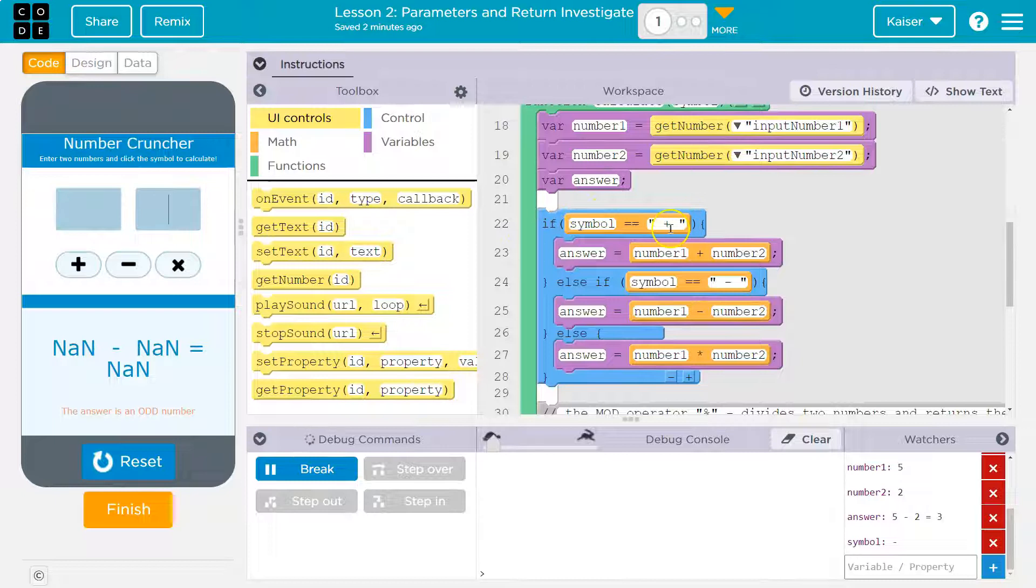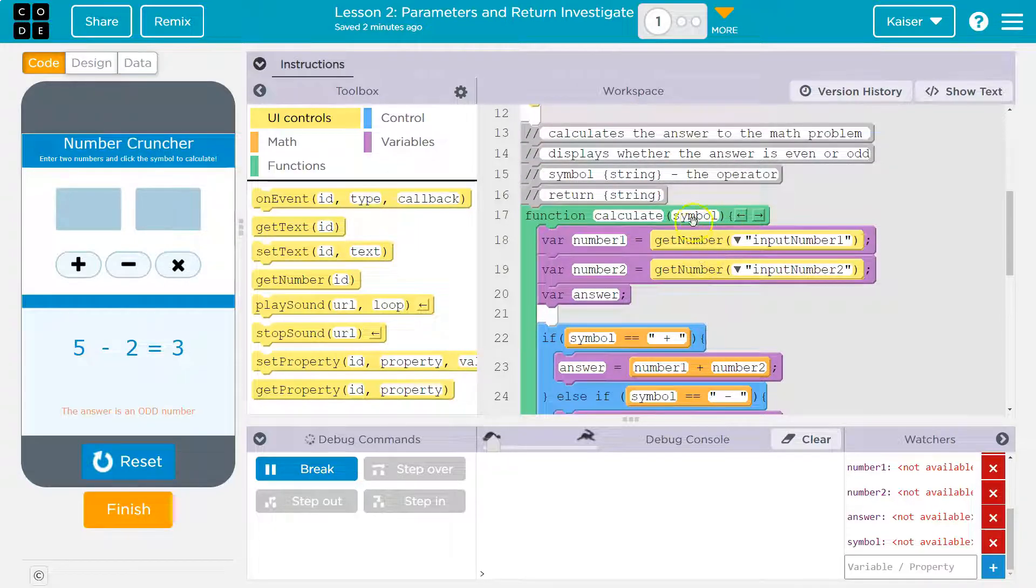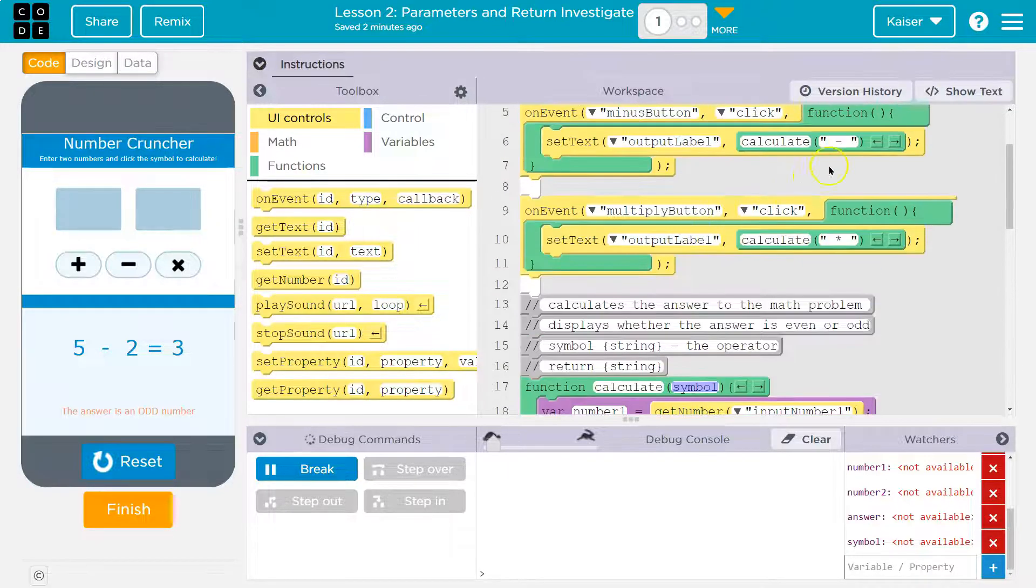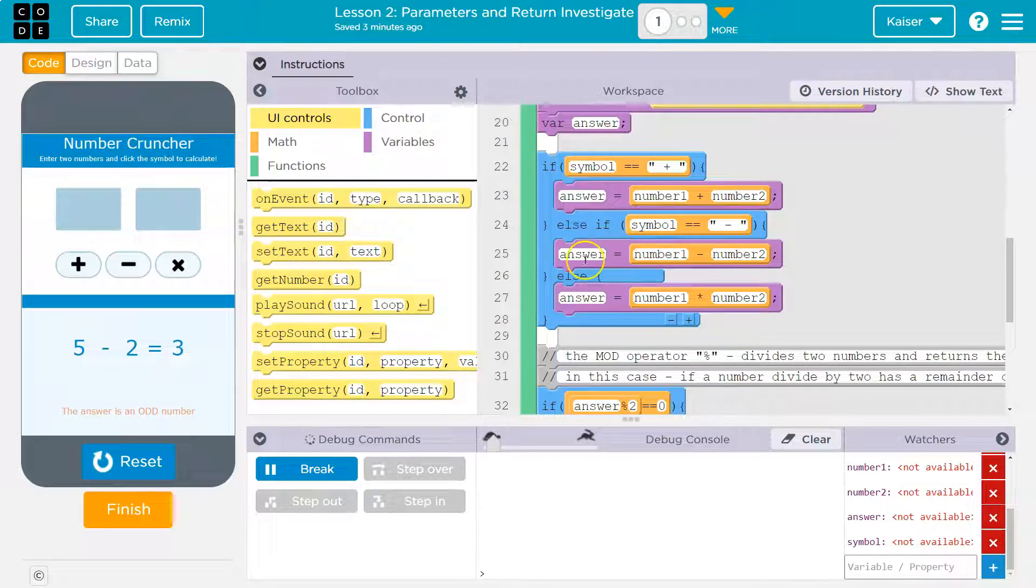Variable number one is going to be equal to, well, if I was doing five and two, variable number one is going to be five. Variable number two is going to be two, right? Answer is nothing yet. Symbol. I'm asking a question. This is a boolean. So if symbol is equal equal to plus, I hit minus. Nope. Symbol would not be equal equal to plus. This is false. It would not run this code inside and it goes here. Symbol equal equal to minus. True, right? That's what the symbol would be equal to. Where is it getting that? This.